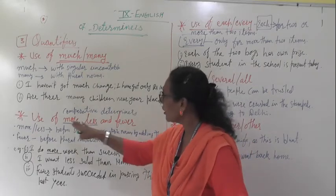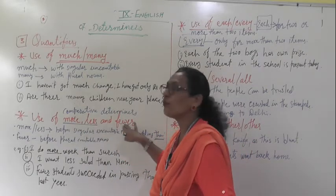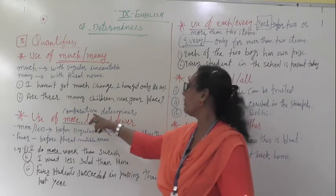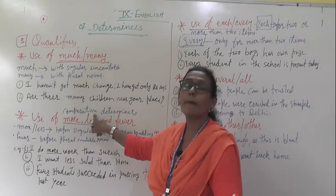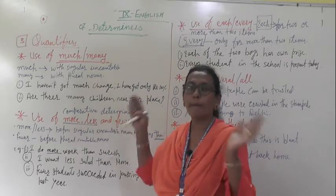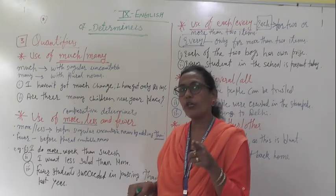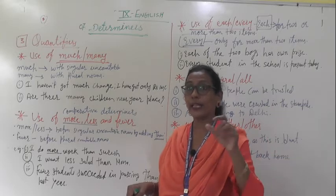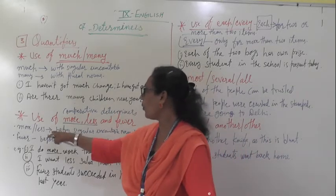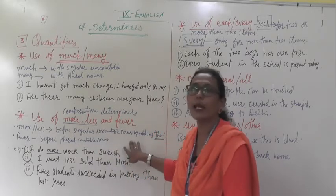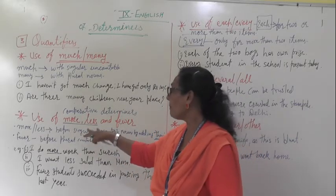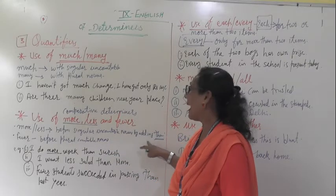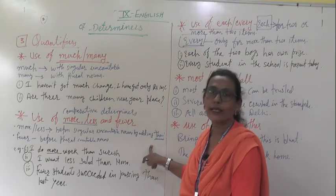Now we will see the use of more, less, and fewer. These are comparative determiners — we use them when we compare. When comparing, we always use 'than'. More and less are used before singular uncountable nouns by adding 'than' after. Fewer is used before plural countable nouns.